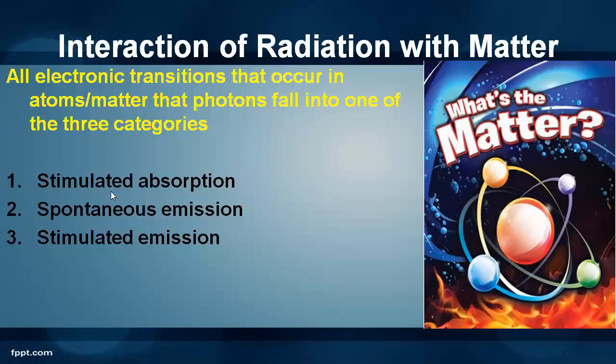The first one is stimulated absorption, the second one is spontaneous emission, and the third one is stimulated emission. From the first point of view, the photon is being absorbed — we know that if any electron absorbs a certain amount of energy it goes to the higher energy level. The second and third are related to emission, that is, the high energy level electron comes to the ground state with the release of energy in the form of a photon.